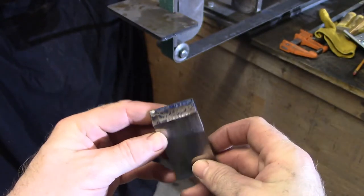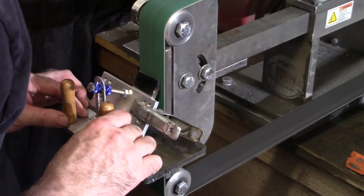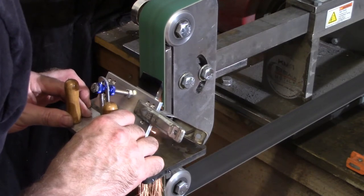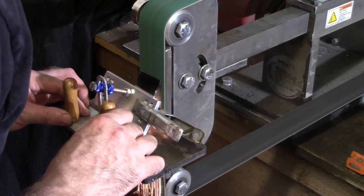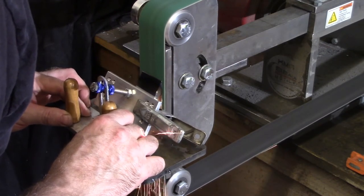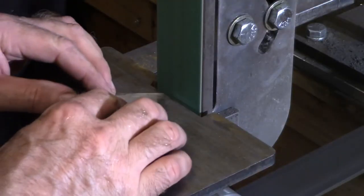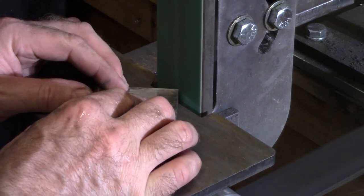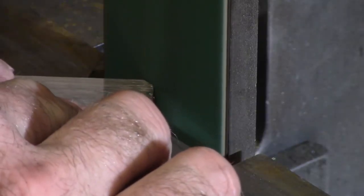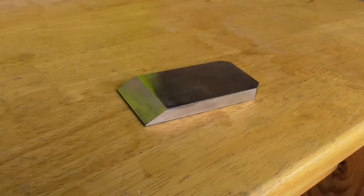Then I use an angle grinder to rough out the bevel. And then I use my knife grinder with a jig to perfect the bevel. Finally, I blunt the corners of the butt end. And this is what the finished plane iron blank looks like.